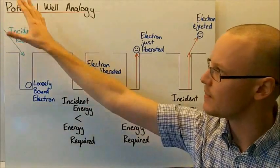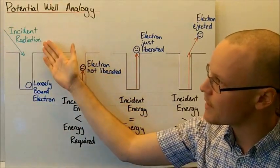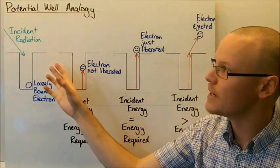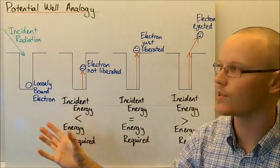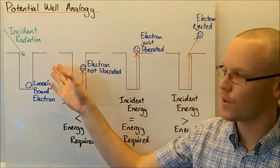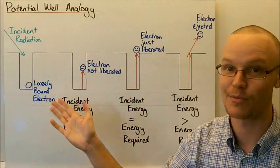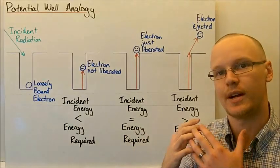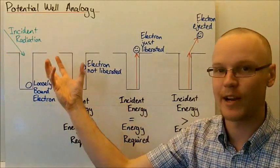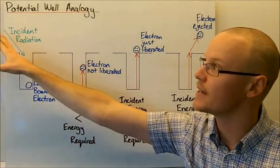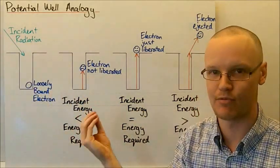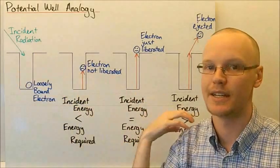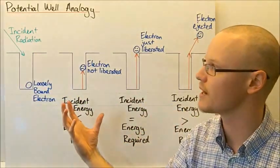If we look at the incident radiation coming into the surface of a metal with a loosely bound electron — this is not what it actually looks like, but it's a good analogy — a quantum of radiation, a packet of radiation, a photon comes in and strikes a metal surface and allows the photoelectric effect to occur.